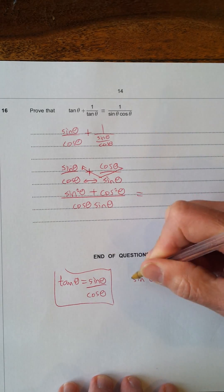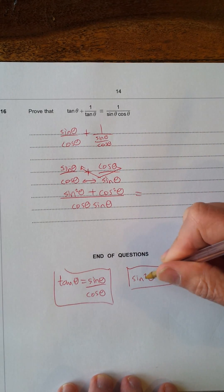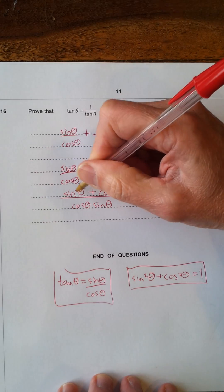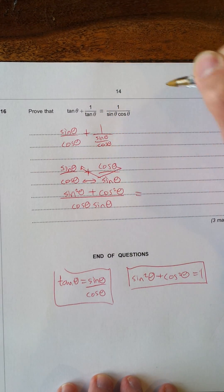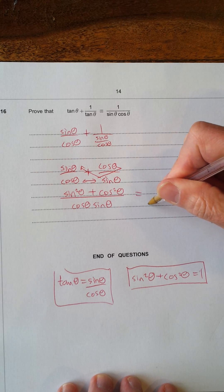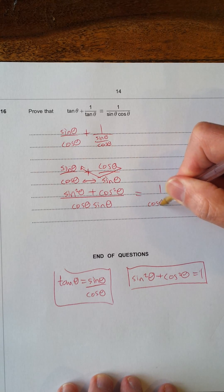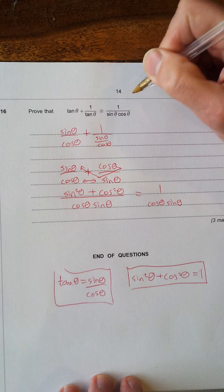Now, looking at the other identity, we've got this, sin²θ + cos²θ = 1. And we have that on the top, on the numerator here. Sin²θ + cos²θ = 1 over cos θ sin θ, which is the same as sin θ cos θ.